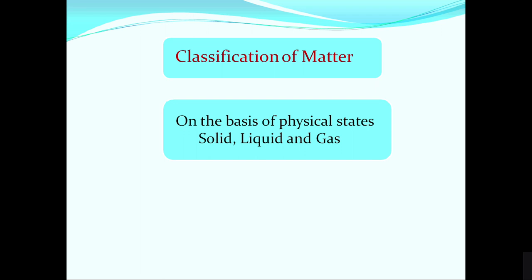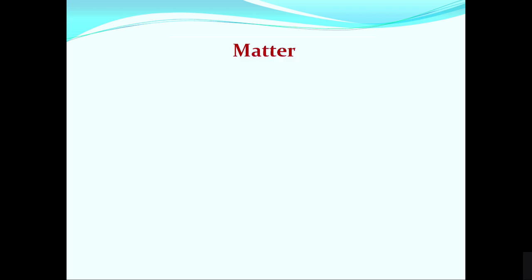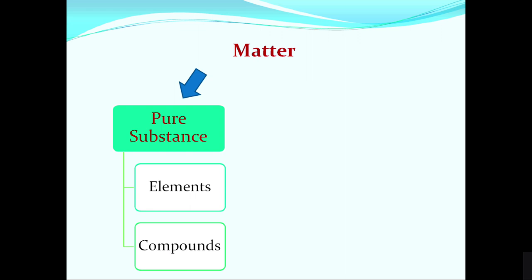Matter can be classified into solid, liquid, and gas depending upon its physical state — you have already studied this. On the basis of chemical composition, matter can be classified as a pure substance or a mixture. Milk and ghee are mixtures of more than one chemical substance. In general, whatever we use is mostly a mixture. Pure substances are only elements and compounds.